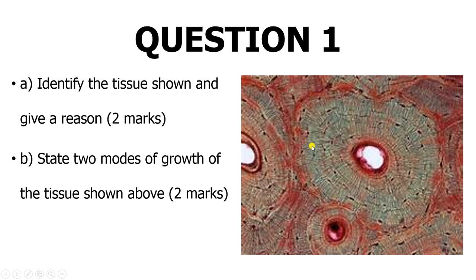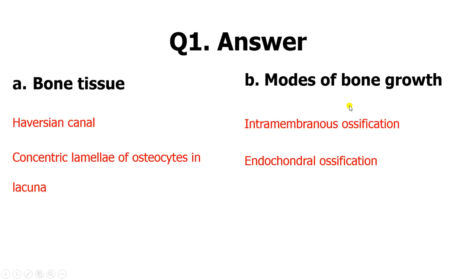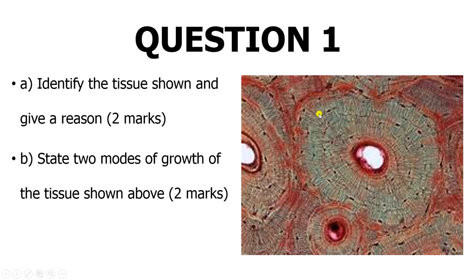This tissue is bone tissue. How you identify it is by the presence of the Haversian canal and the presence of the concentric lamellae of osteocytes in lacunae. This is actually the Haversian canal — you can see it here — and these are your lacunae.